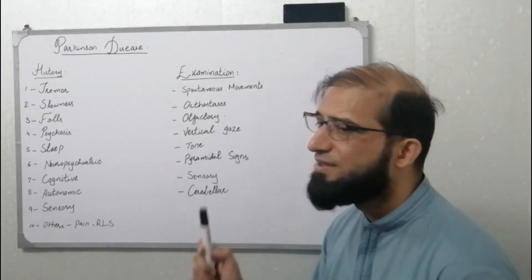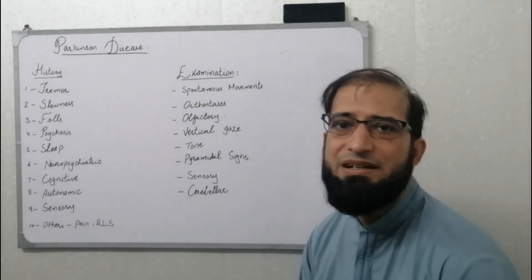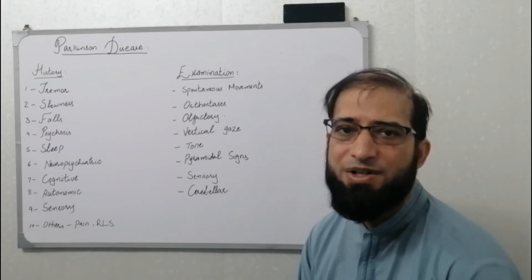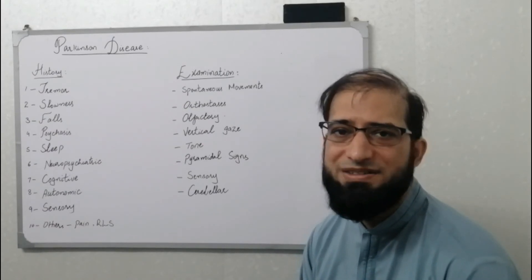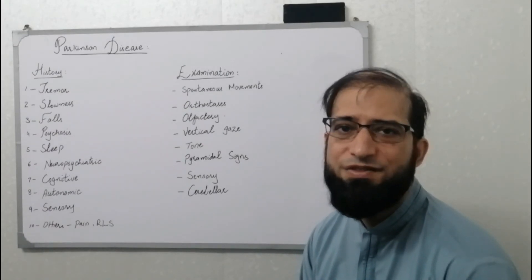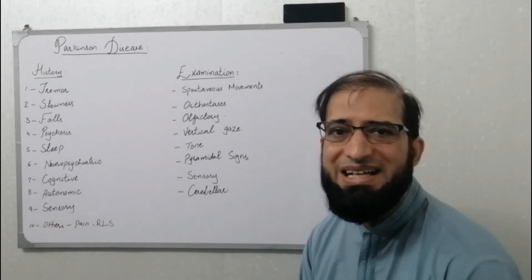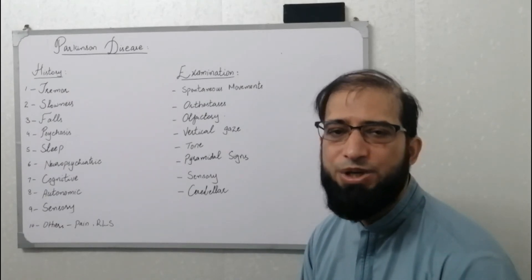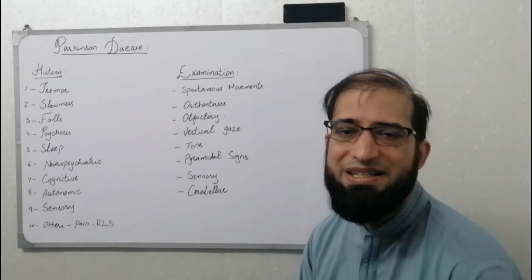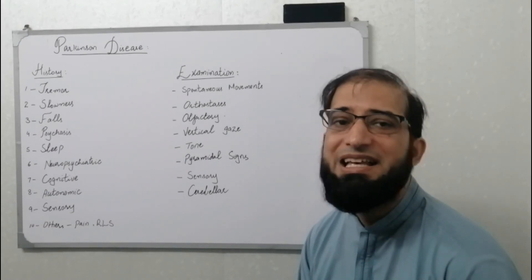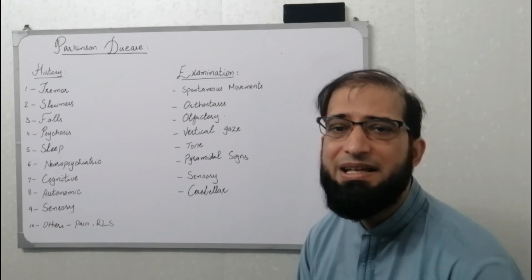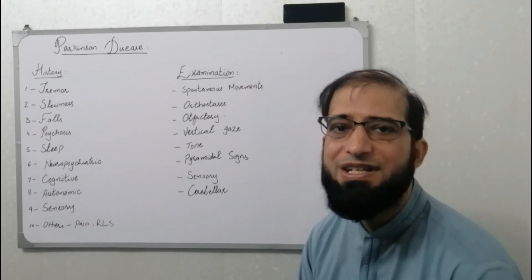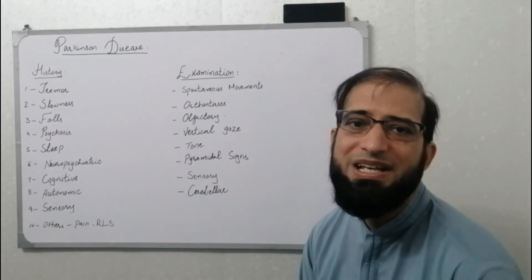Vertical gaze assessment is important when suspecting Parkinson's disease. A variant called progressive supranuclear palsy (PSP) is characterized by restricted vertical eye gaze abnormality and frequent falls. Identifying this helps prognosticate and guide the patient and family regarding management and what to expect.